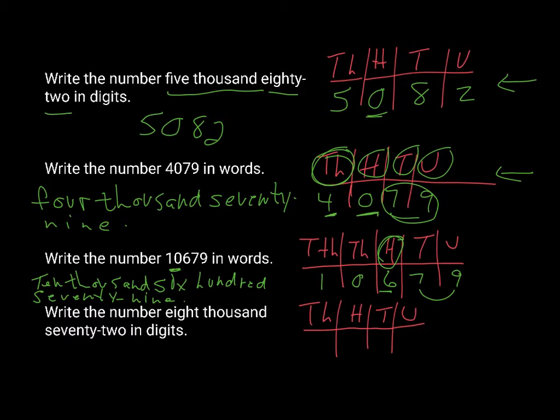Go into the next one, write the number 8,072 in digits. Again, because it's in words it's a little bit harder to start with the units, so when it's in words like this I usually take the numbers as they appear in the sentence.